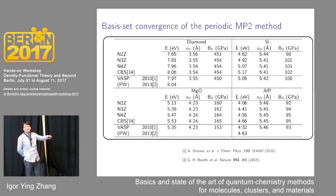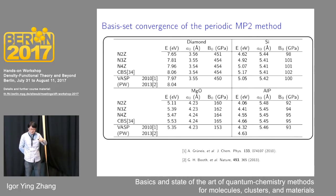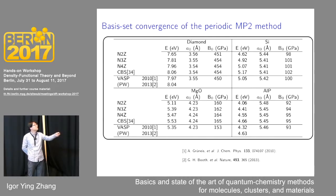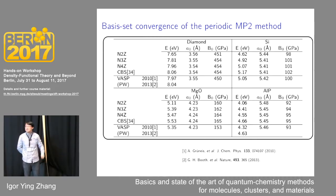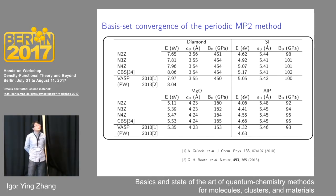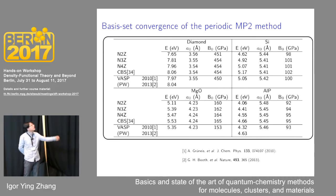From this figure, we can see that basis set convergence is not a big issue for lattice constants or bulk moduli — geometry information — where the NAO triple-zeta basis set is good enough to approach the desired accuracy compared to the complete basis set limit result. However, slow basis set convergence is indeed a big challenge for cohesive energy calculations. Compared to the complete basis set limit, the basis set error in the quadruple-zeta basis set still remains about 100 meV for all different kinds of materials.